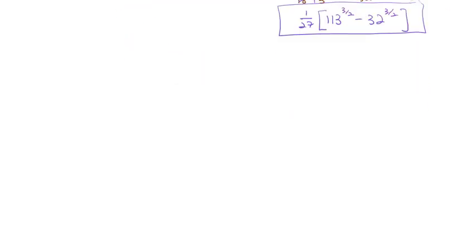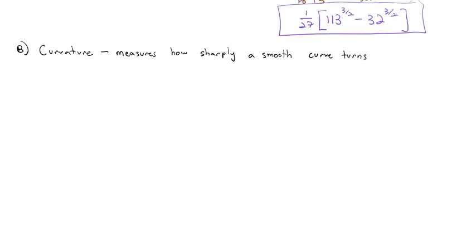We've done arc length before when we worked with parametric curves, so we're going to move to the next topic, which is curvature. Curvature is an important concept as we look at a curve — it measures how sharply a smooth curve turns. If it's a real sharp, tight curve, you'll get a larger curvature. If it's a nearly flat, wide curve, you're going to get a much smaller curvature. Curvature measures how sharply the curve turns, similar to slope or the derivative measuring how fast the curve changes.